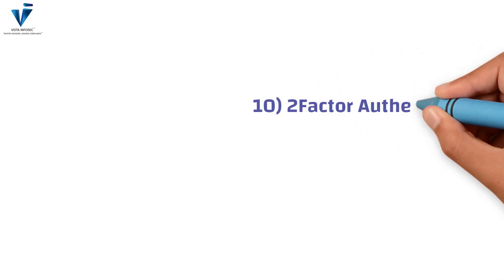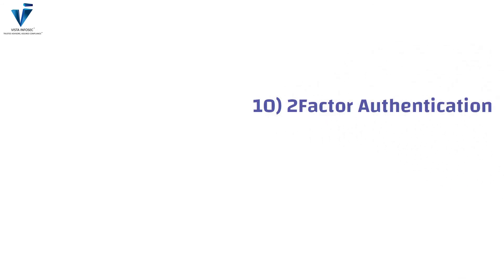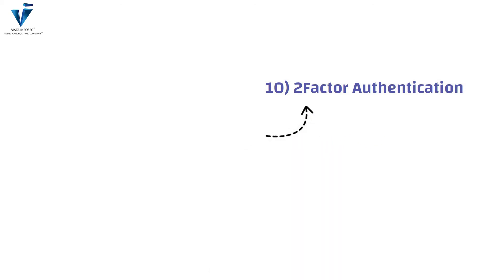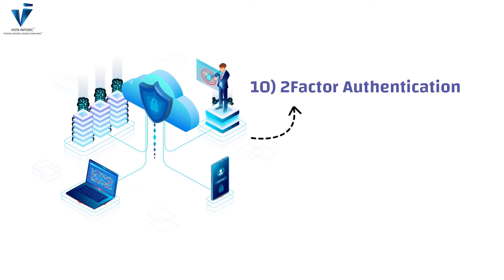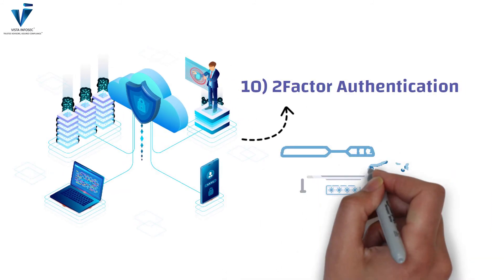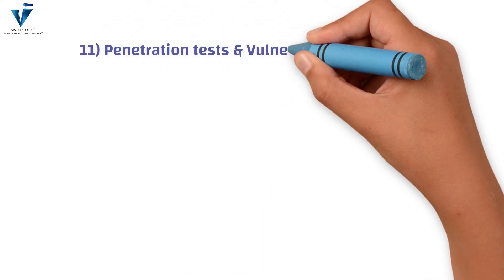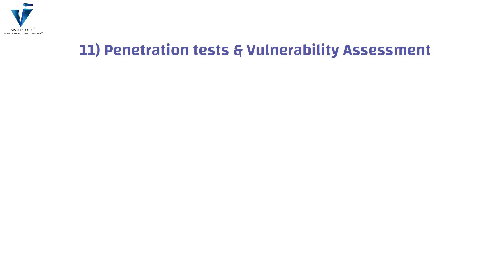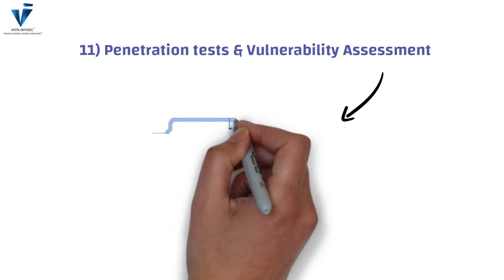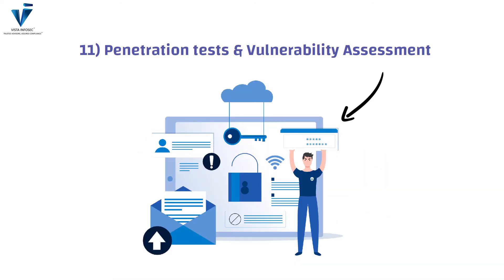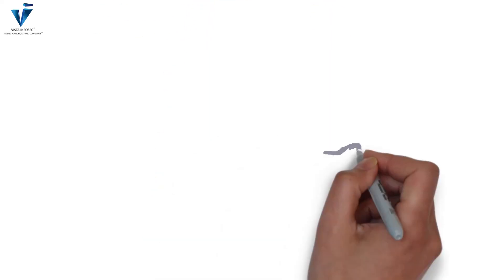The tenth checklist item is two-factor authentication. Incorporating two-factor authentication for any login systems to prevent the possibility of unauthorized access to sensitive information is crucial. The eleventh and final item is penetration testing and vulnerability assessment. Organizations must at least yearly or half-yearly perform penetration tests and vulnerability assessments at both network and application levels for quick detection and remediation of vulnerabilities.